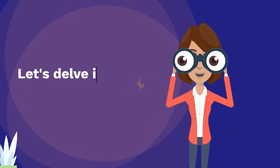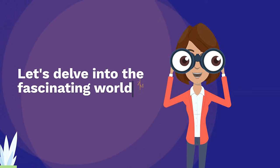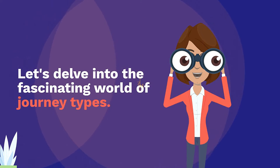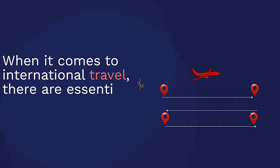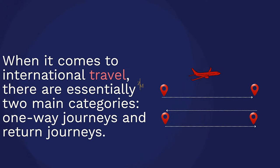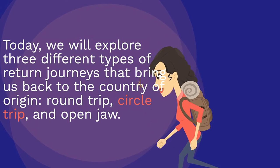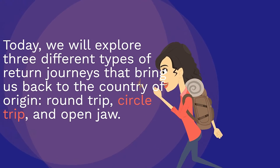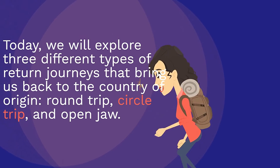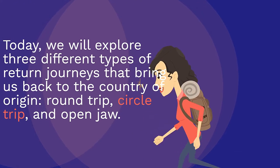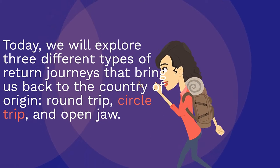Let's delve into the fascinating world of journey types. When it comes to international travel, there are essentially two main categories: one-way journeys and return journeys. Today we will explore three different types of return journeys that bring us back to the country of origin — round-trip, circle-trip, and open-jaw.